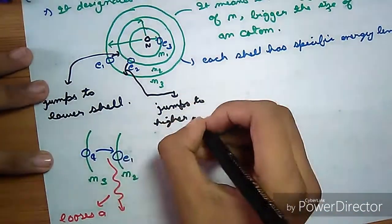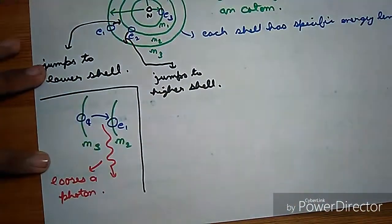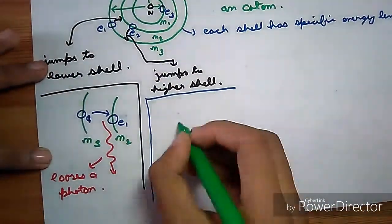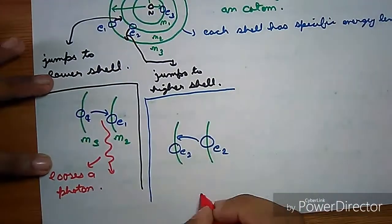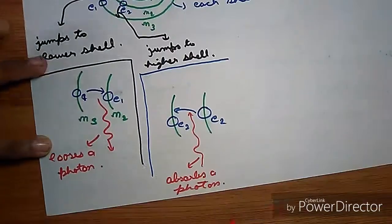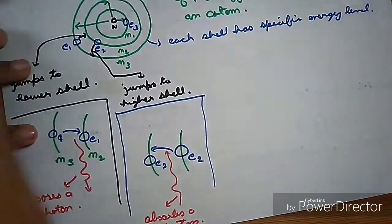If an electron jumps from a lower to higher shell, as from N2 to N3, it absorbs a photon and increases its energy.